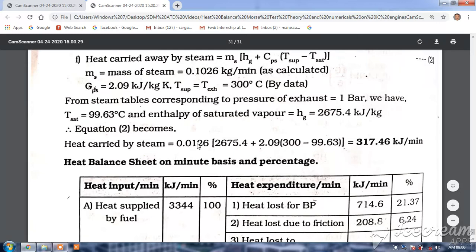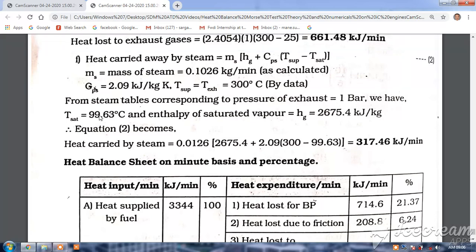How we got this enthalpy: he has taken 1 bar pressure, normal atmospheric pressure. The saturation temperature is almost 100°C or 99.63°C. For that, from steam tables, enthalpy of dry saturated gas is 2675 kJ/kg.